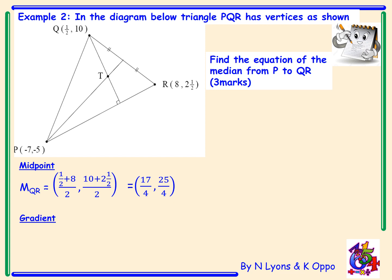The gradient of our median: the gradient PM is -5 take away 25/4 divided by -7 take away 17/4. If this was a non-calculator question, we would need to change -5 to -20/4 and -7 to -28/4. Hence, simplifying to -45/4 divided by -45/4, which will give us a gradient of 1.